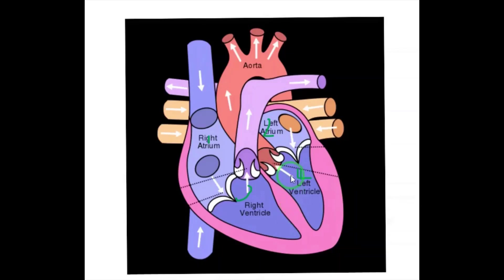Now let's see the valves. There are three types of valves present. The first is the tricuspid valve, which is located between the right auricle and the right ventricle.